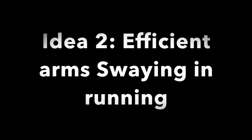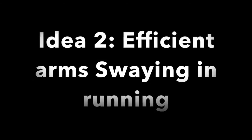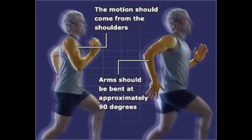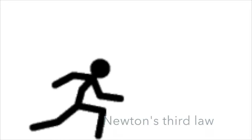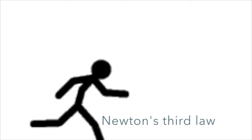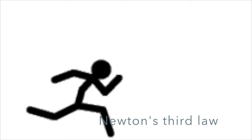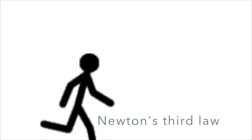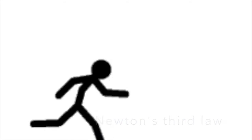The second idea would be to efficiently sway one's arms backwards and forwards when running. Motion should come from the shoulders, and the arms should be at least 90 degrees when swaying backwards. This is because for every action there is an opposite and equal reaction, hence moving the arms back and forth also contributes to the movement of the whole body.